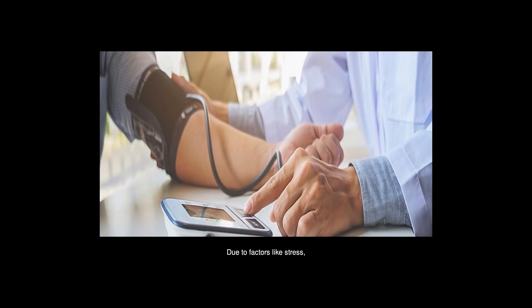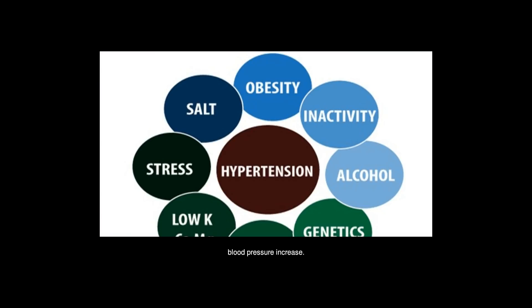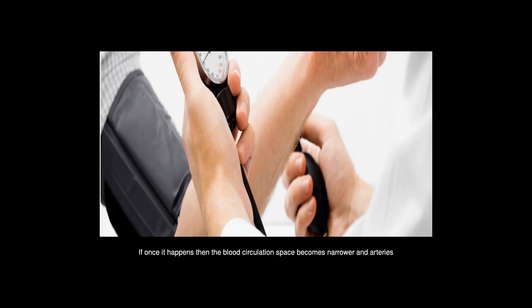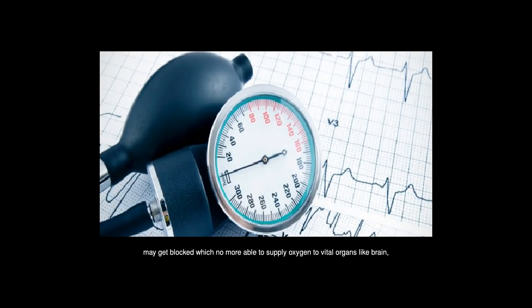Due to factors like stress, smoking, being overweight or obese, lack of physical activity, too much alcohol consumption, blood pressure increases. High blood pressure or hypertension sometimes temporarily occurs that puts stress on the artery walls and they become weakened or thickened. If this happens then the blood circulation space becomes narrower and arteries may get blocked which no more able to supply oxygen to vital organs like brain, heart or kidneys.